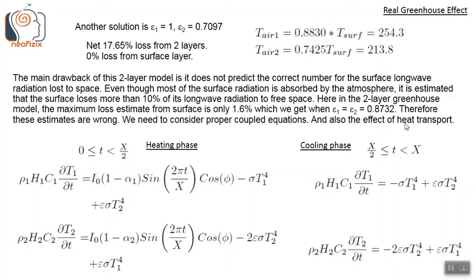We need to consider proper coupled equations and also the effect of heat transport. These coupled heating and cooling phase equations must be solved simultaneously: two coupled equations for the surface layer and the air layer during the heating phase, and two coupled equations during the cooling phase. We have to actually use these equations to get the correct estimates of the surface temperature and the back radiation effect.